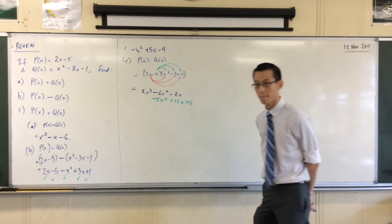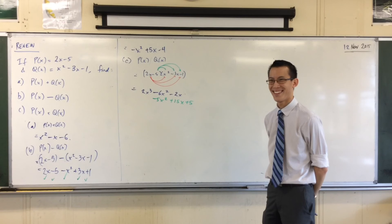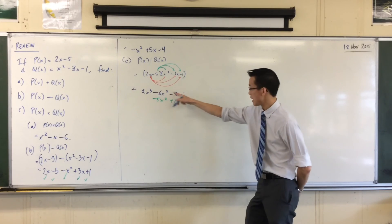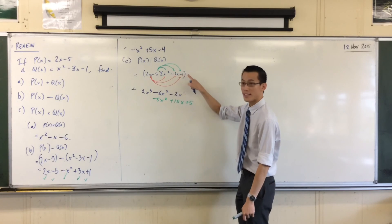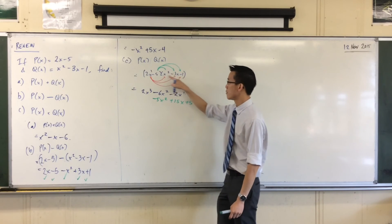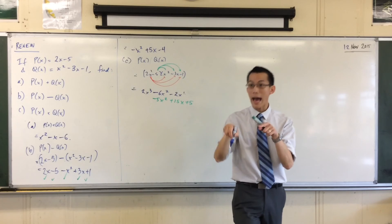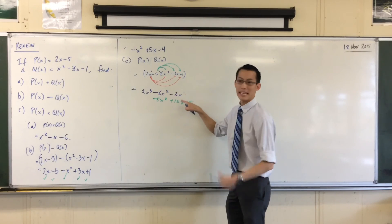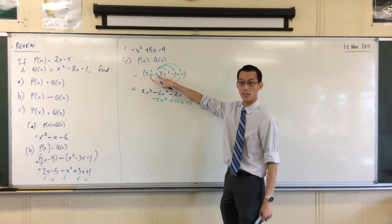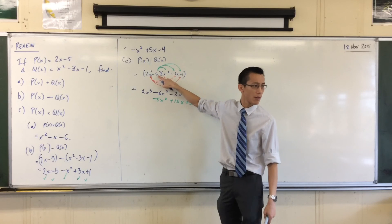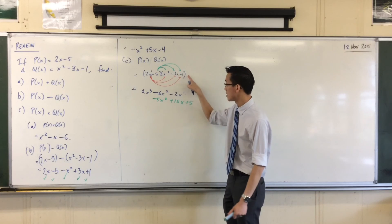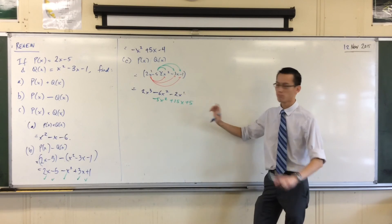Is it a coincidence that there are 3, 2, 1 powers in the first group and 2, 1, 0 in the second? Not at all. Think about your index laws — you're multiplying X to the 2, 1, and 0 by X to the 1, so each index should add 1, which is why each index in the first row is exactly one bigger than each in the second. And this constant term is X to the 0, so that 0 adds 0 to each of those indices — which is why those indices exactly match the second row. Not a coincidence at all.